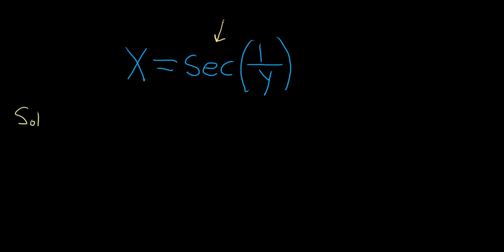Okay, so solution. On the left hand side when we take the derivative with respect to x we just get 1. On the right hand side we're taking the derivative of the secant of 1 over y. So the derivative of secant is secant tangent.